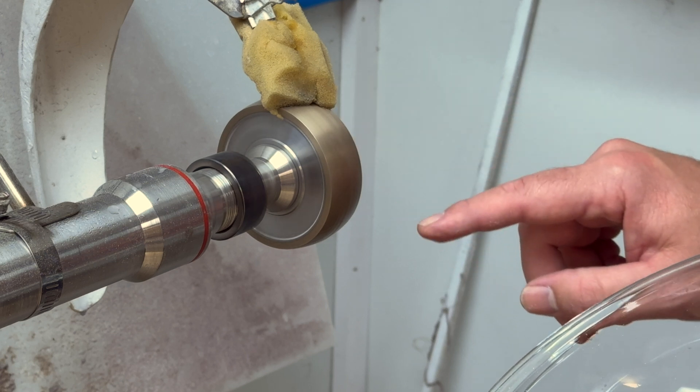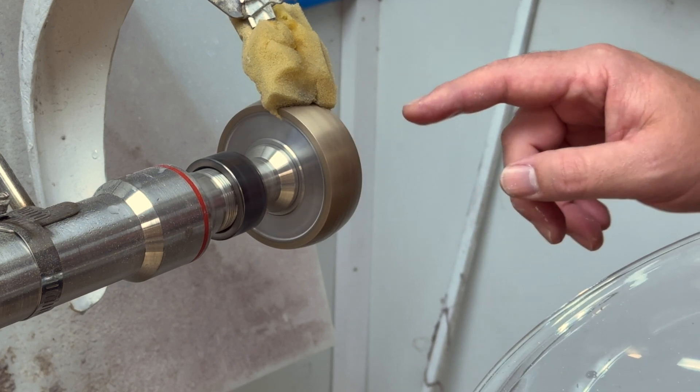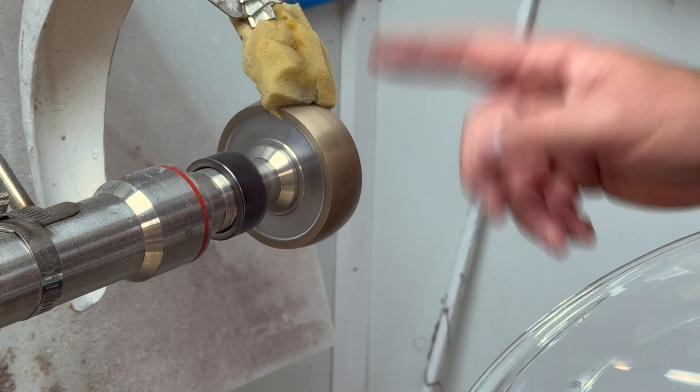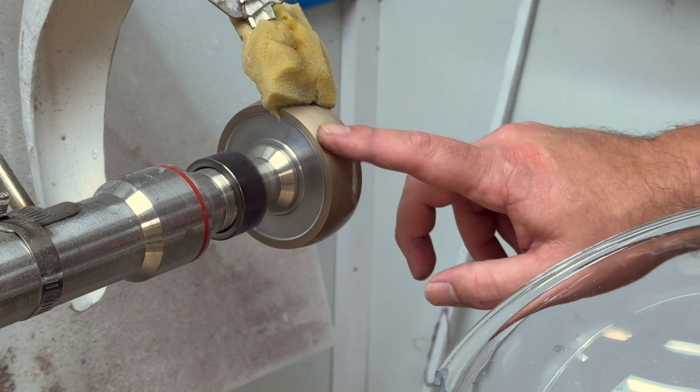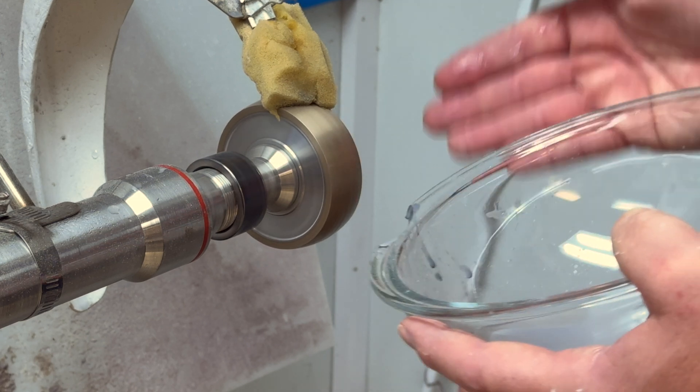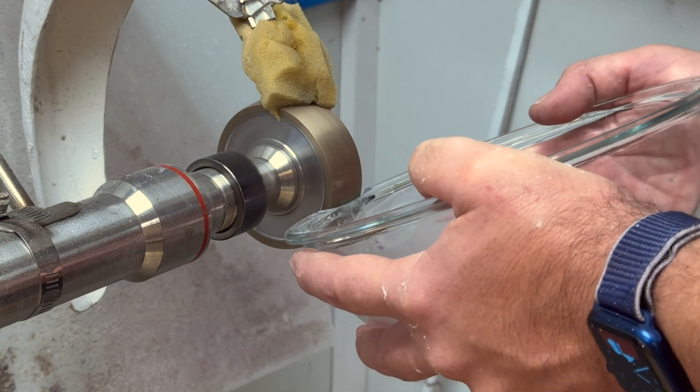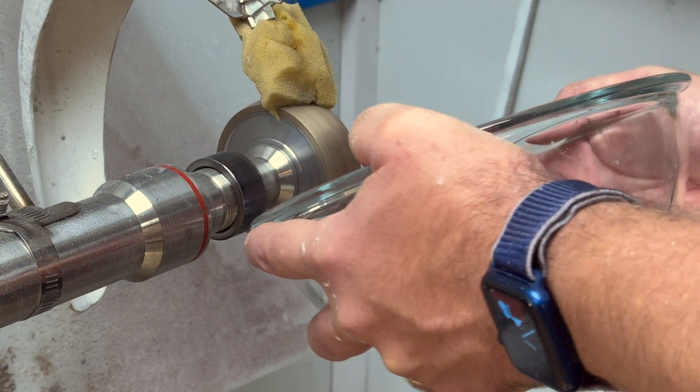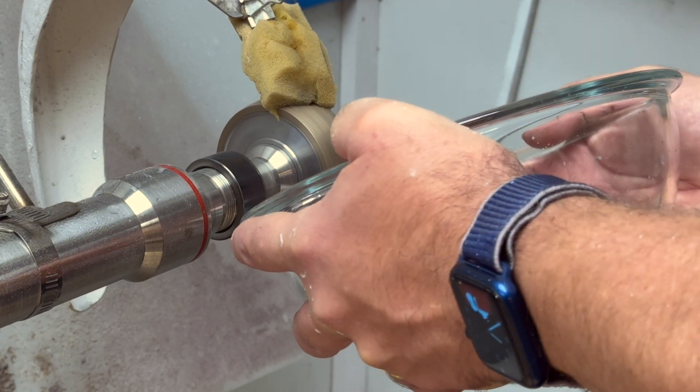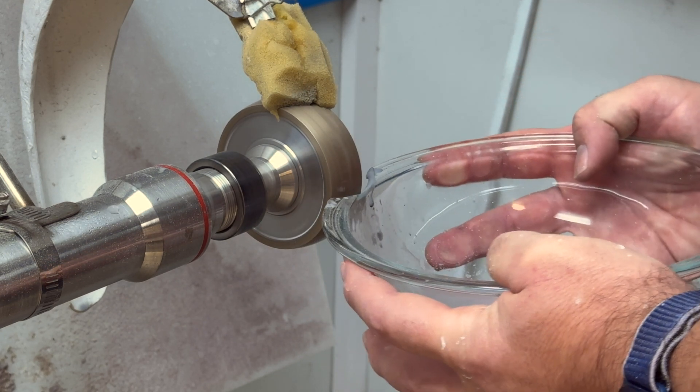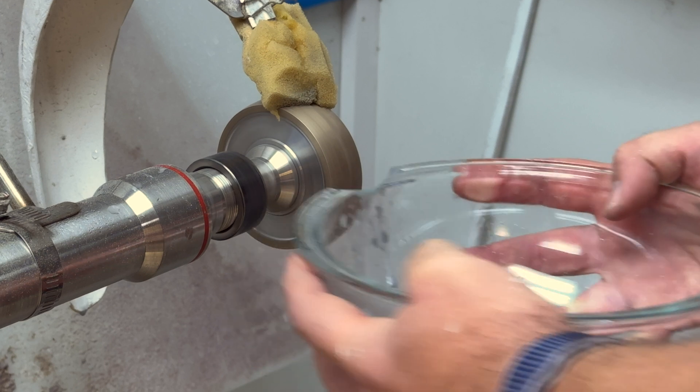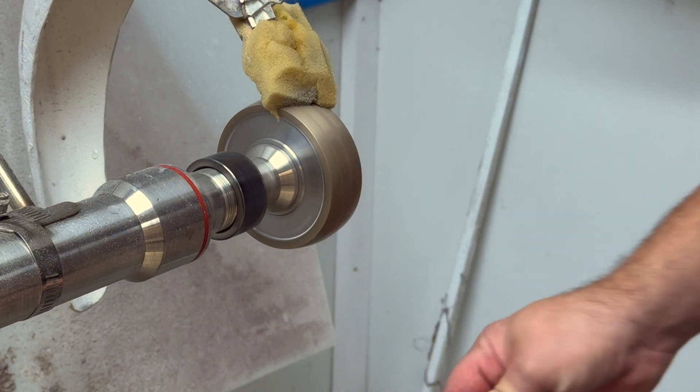Now we can redress sintered wheels and get that radius back, but we have to send them off to Europe and it's expensive to get it done and time consuming. So it's best to try and maintain your profile as much as possible. So you want to try and follow that profile as you're grinding to keep that wheel the way it should be. That's actually pretty fast.